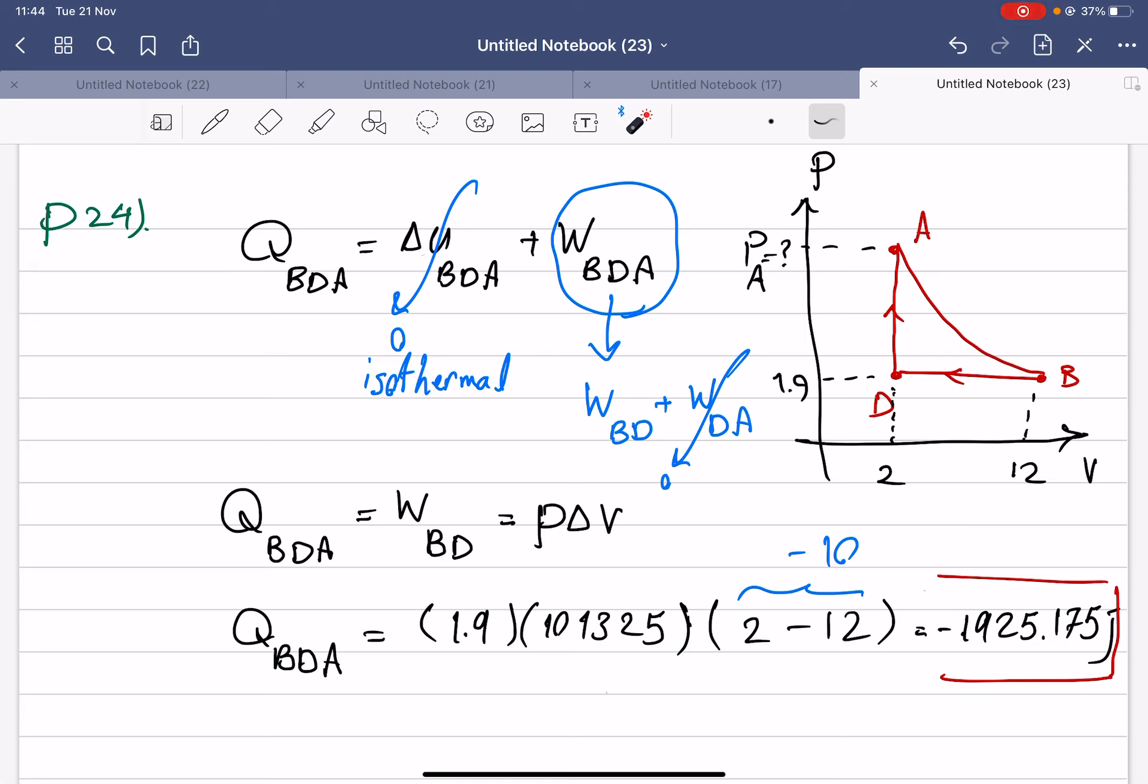For BDA, it will be delta U of BDA plus W of BDA. Because from B until A the temperature is fixed, the change in internal energy will be zero.